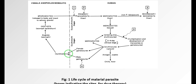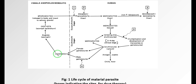When a mosquito bites an infected human, the gametocyte form enters into the mosquito. Female and male gametocytes fuse together by fertilization, and the fertilization process occurs inside the mosquito. As a result of fertilization, a zygote is formed in the stomach of the female Anopheles mosquito. The zygote is then converted into an oocyst.